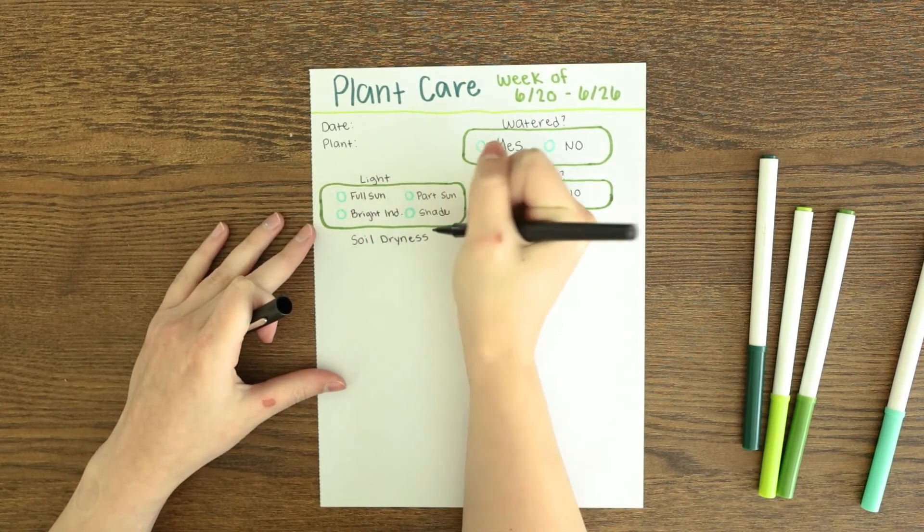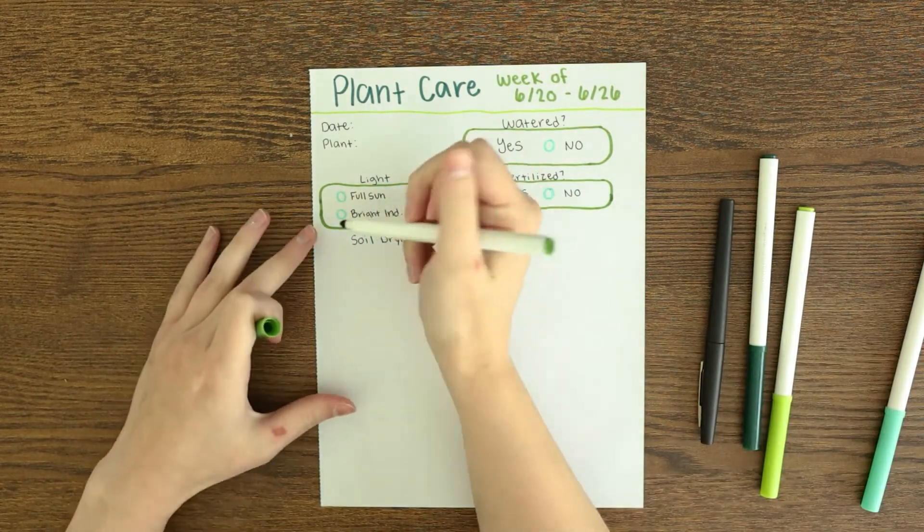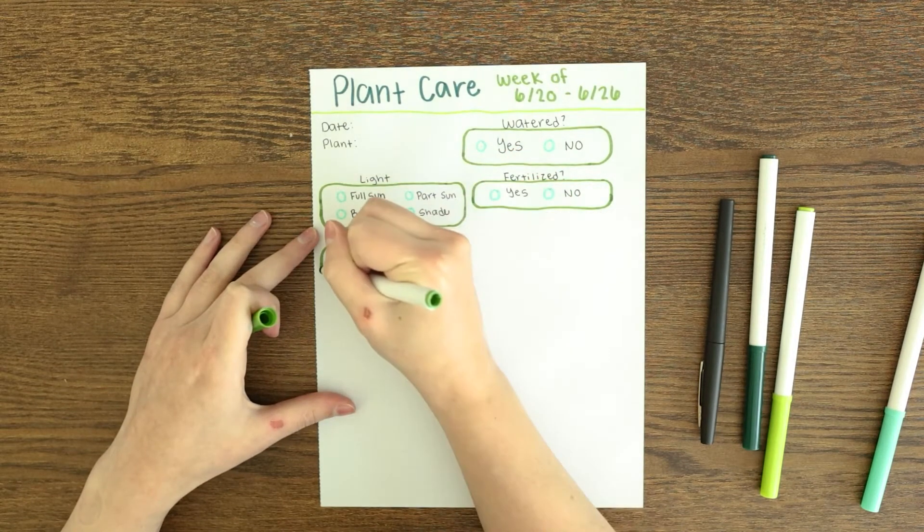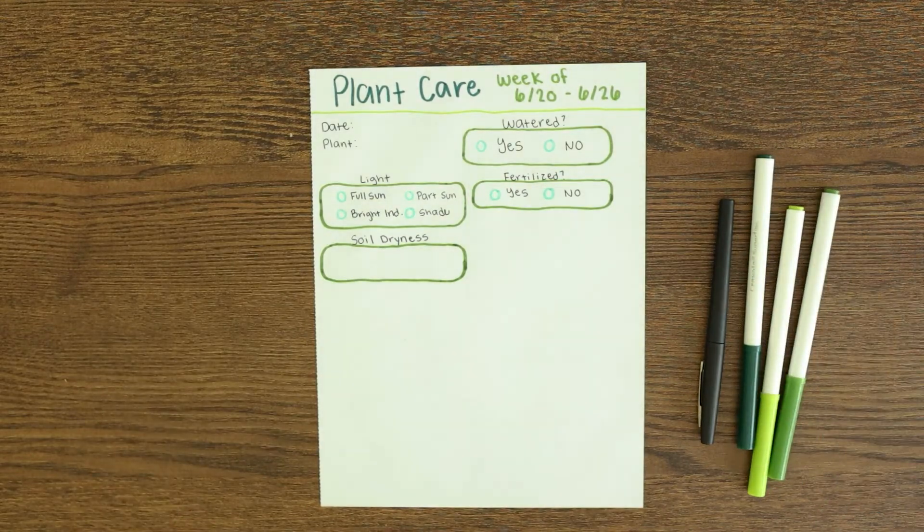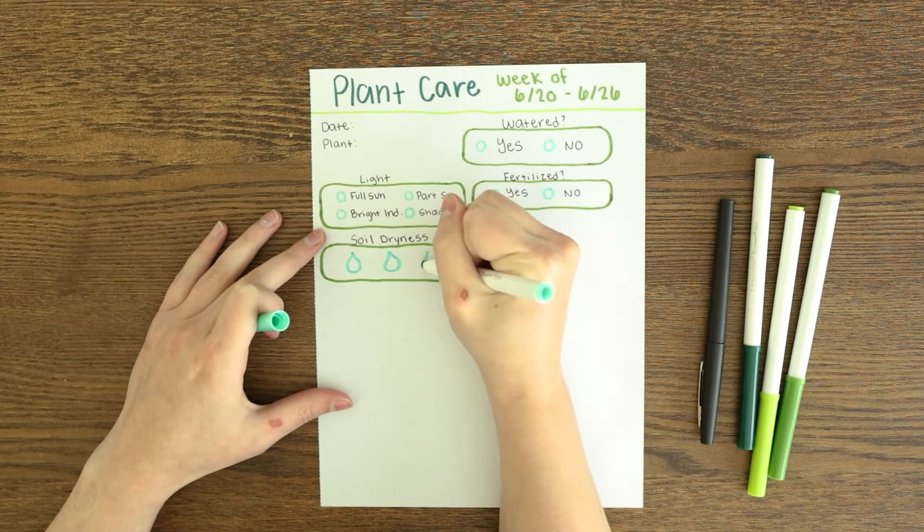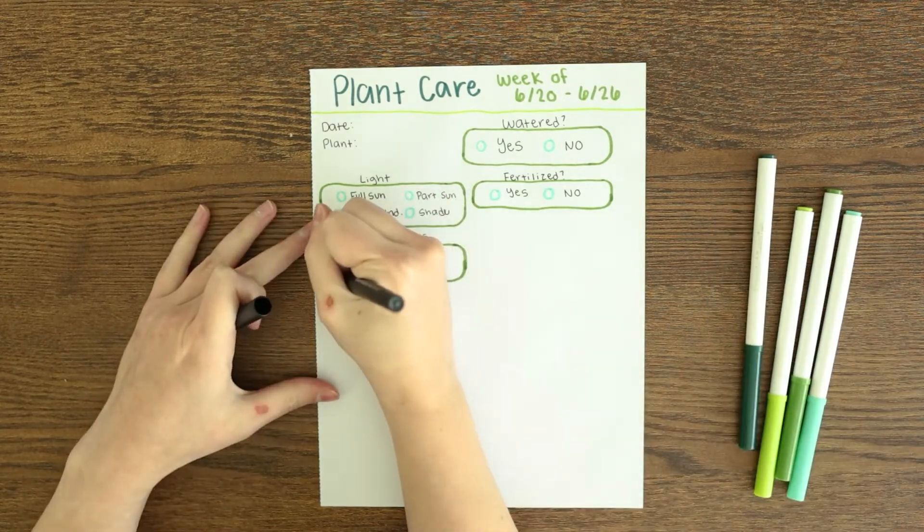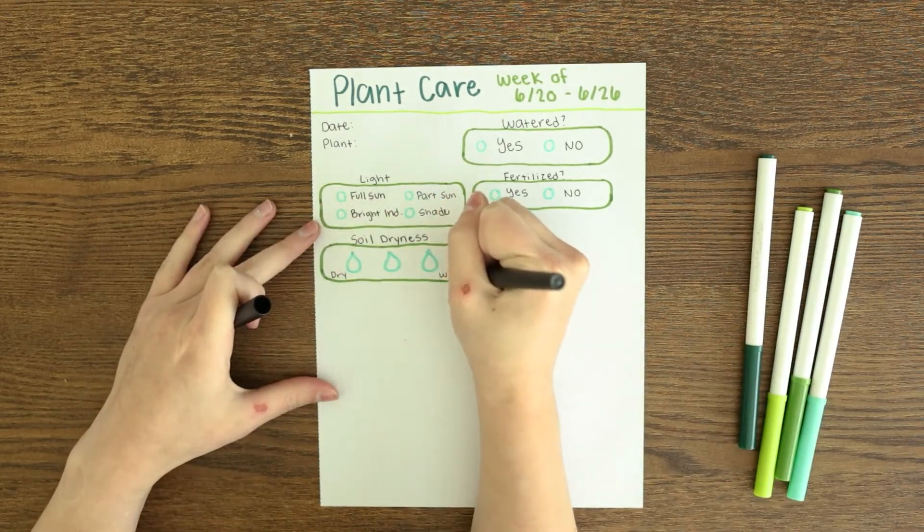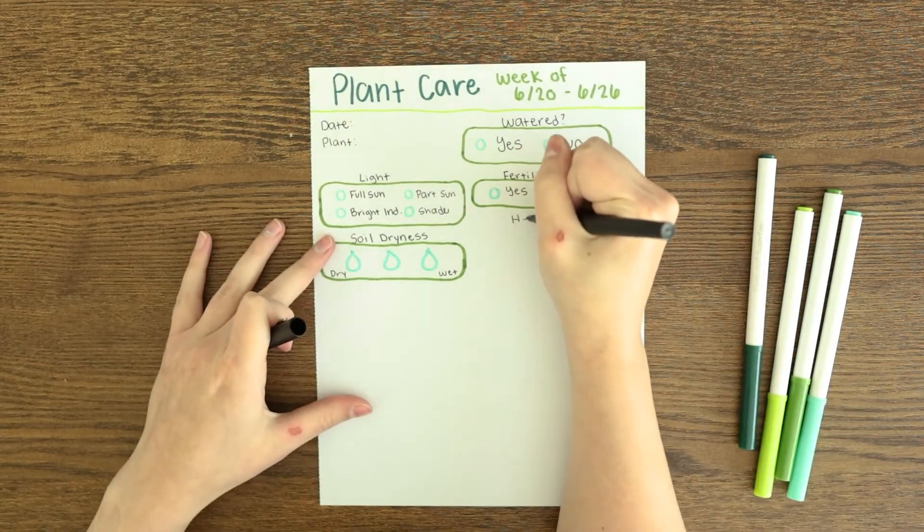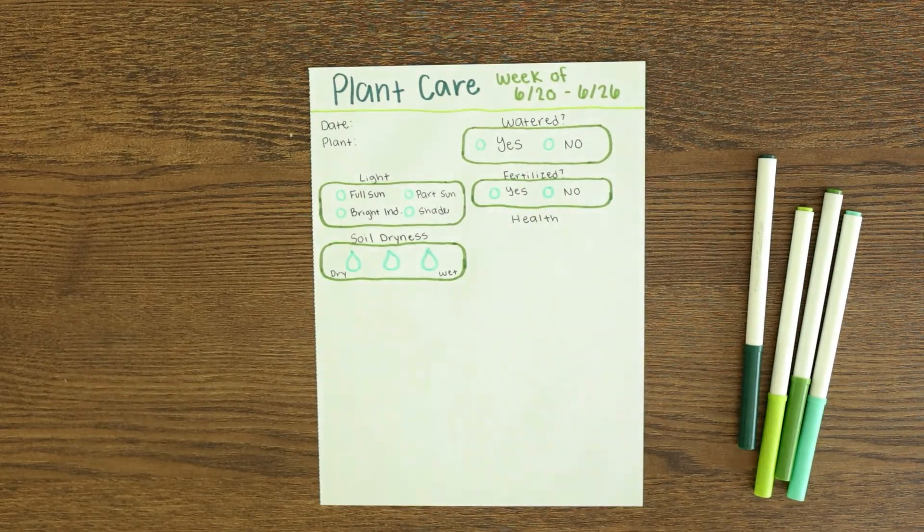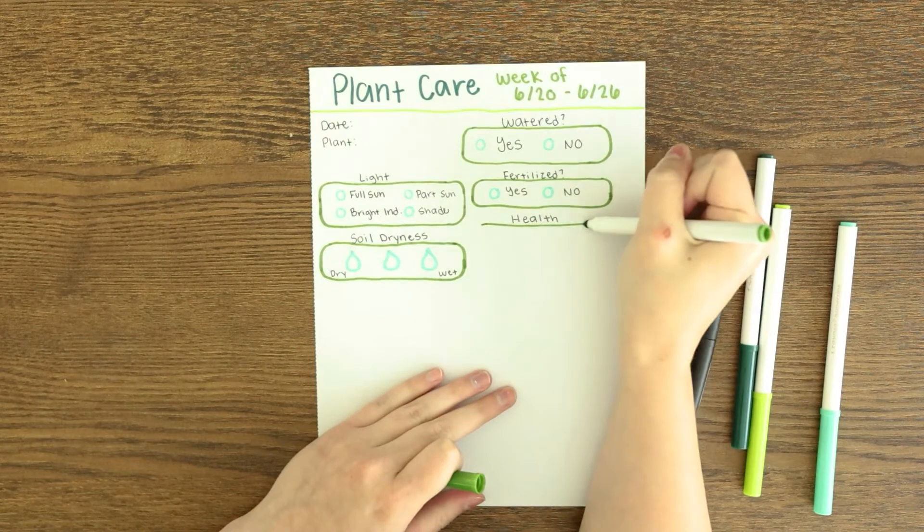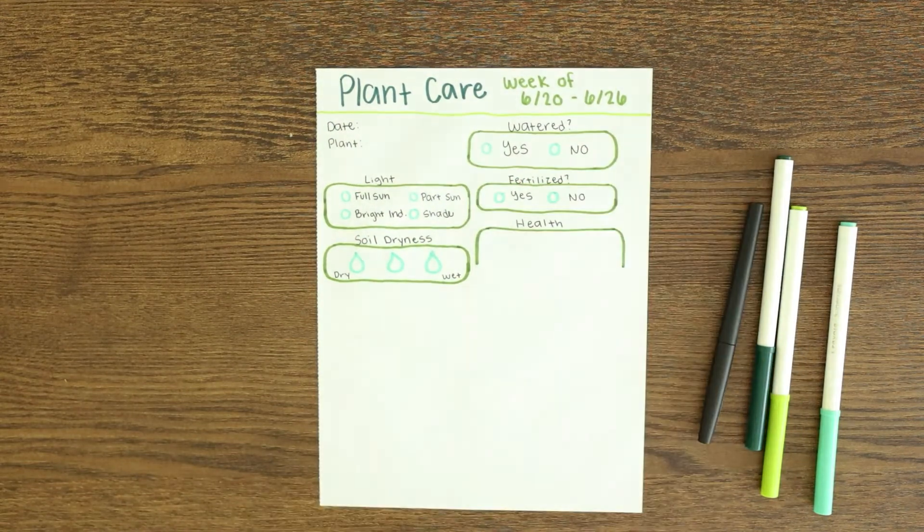This is definitely for people who really like to get to know their plants and understand taking care of their plants and what certain things do to them. I have 'watered' and then I have 'light' and it says full sun, bright indirect light, and then part sun and shade. I would just mark whichever one hit that day.